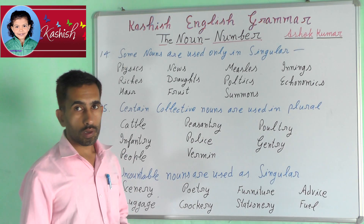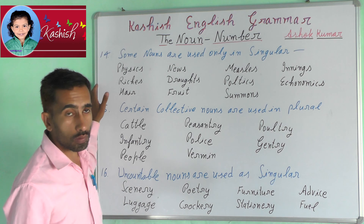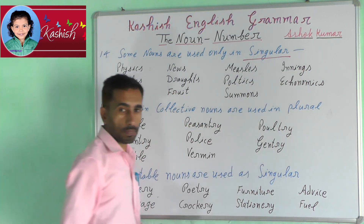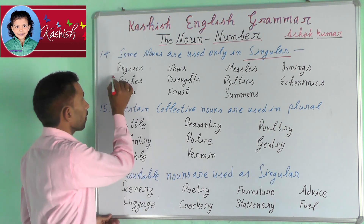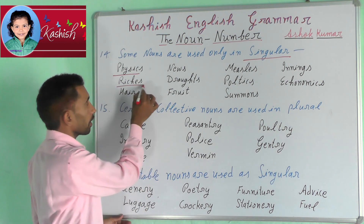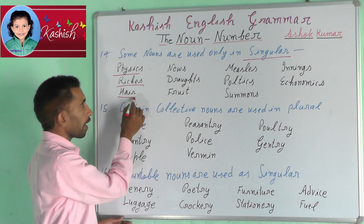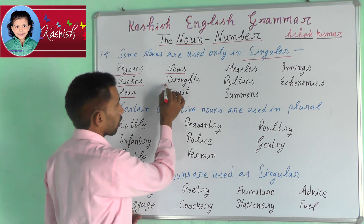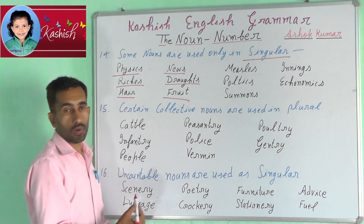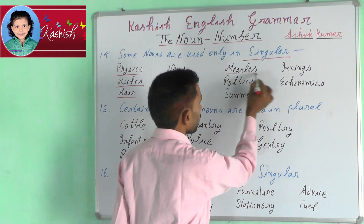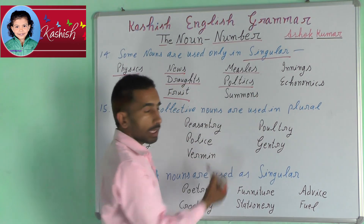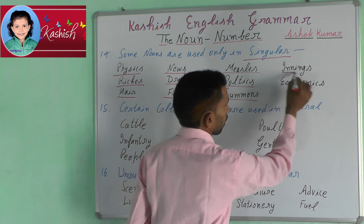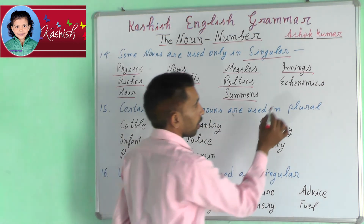Fourteenth rule: some nouns are used only in singular. For example: physics, riches, hair, news, droughts, fruit, measures, politics, summons, innings, economics.